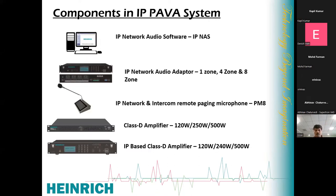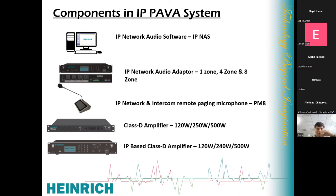The components of an IP PA/VA system include: a central software server, which is the heart of the system — it manages all communication between devices and allows you to monitor, check reports, and make announcements. IP network audio adapters, meaning zone controllers — we have one-zone, four-zone, and eight-zone controllers for the IP PA/VA system. You can install these anywhere over the network and connect your normal amplifiers and speakers. There is also the network and intercom remote paging microphone.